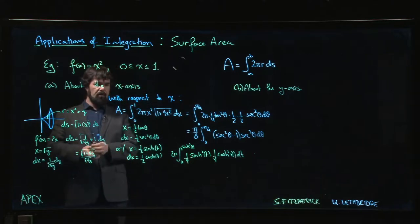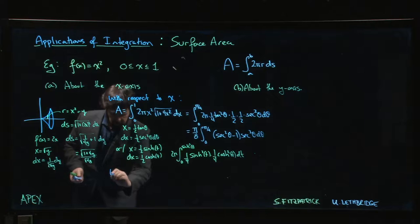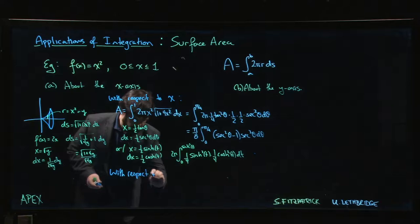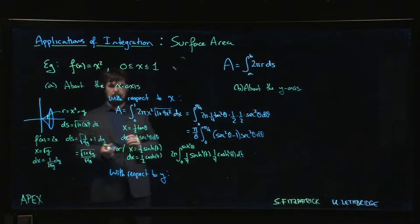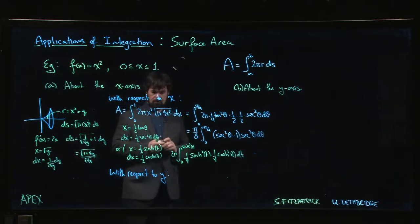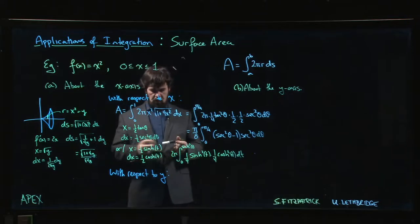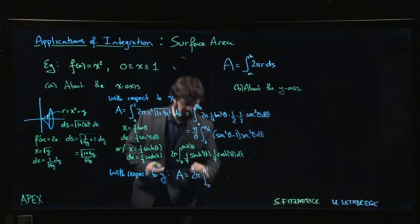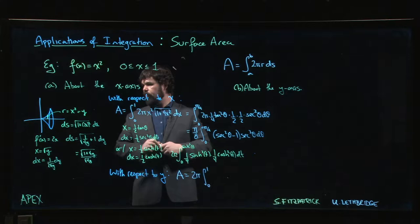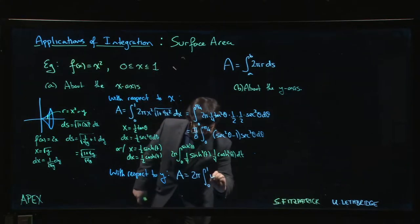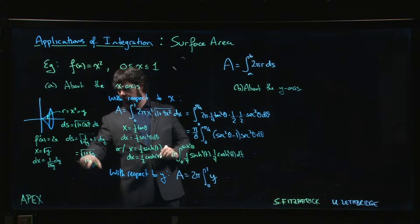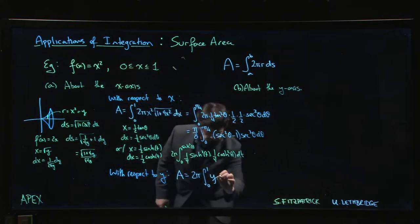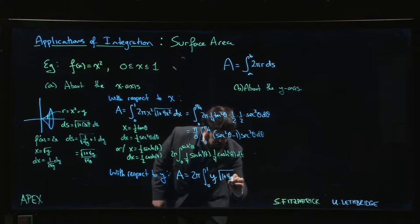The other option you could always do is you could always say, well what if I tried it with respect to y? Do things get any better? Maybe, let's have a look. So with respect to y, we get 2π, y still goes from zero to one, so now the radius is just y. Your ds becomes this thing, 1 plus 4y under the square root, on the bottom we have 2 root y, dy.